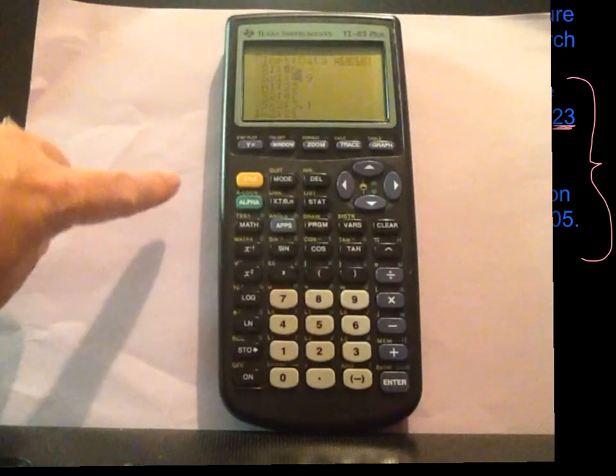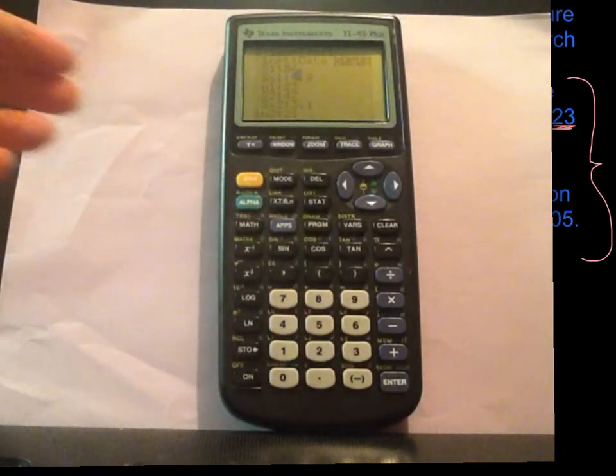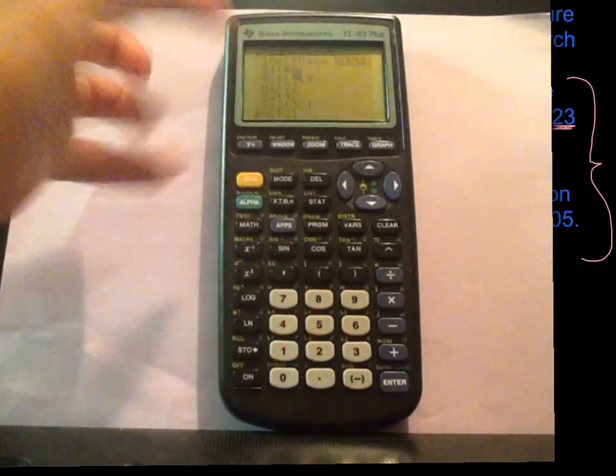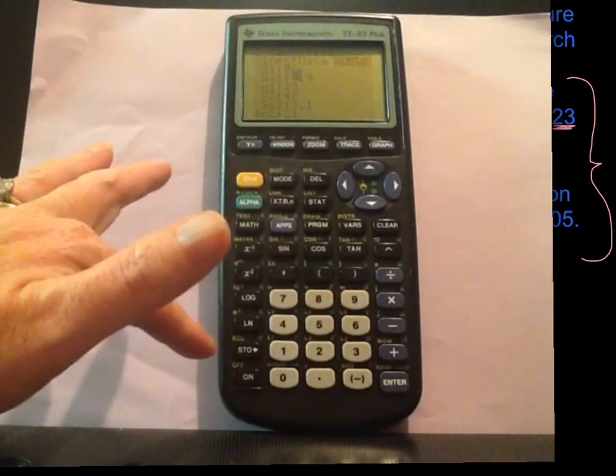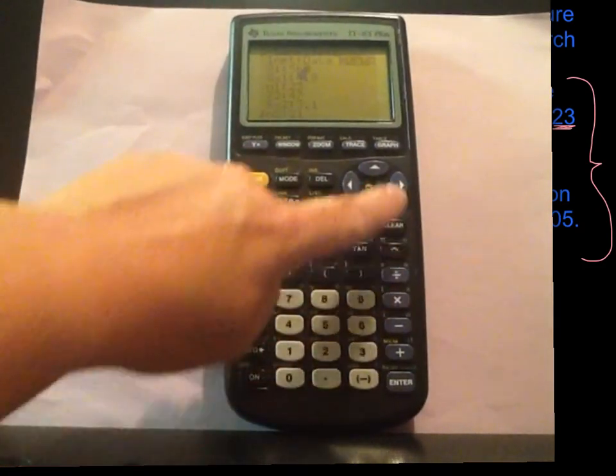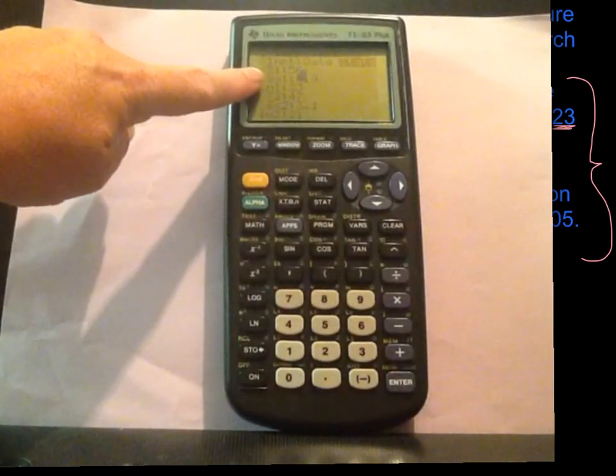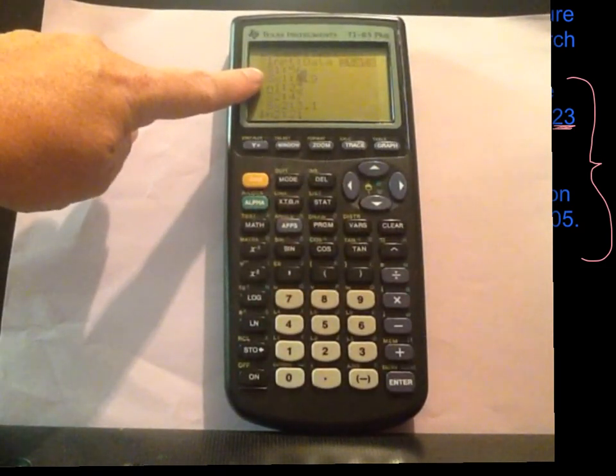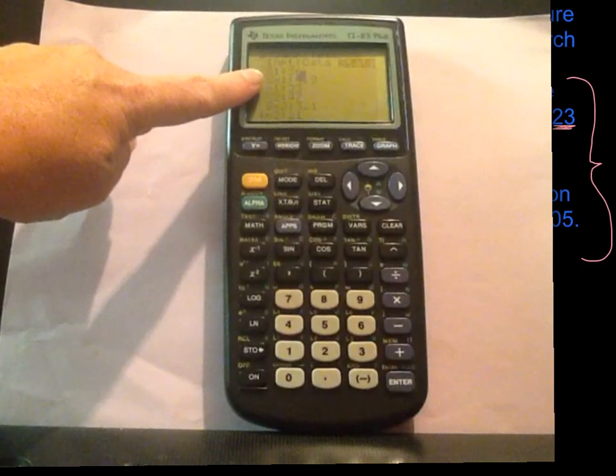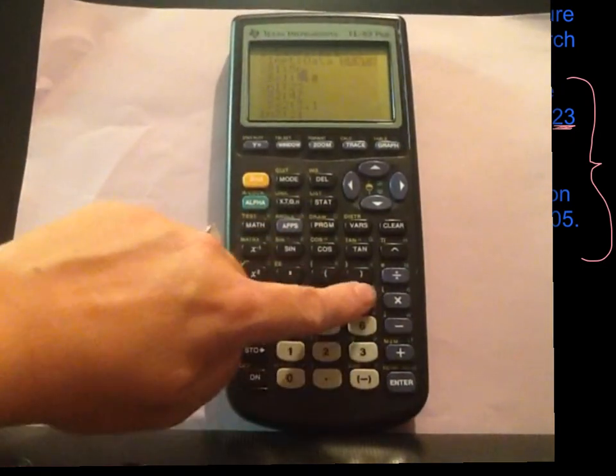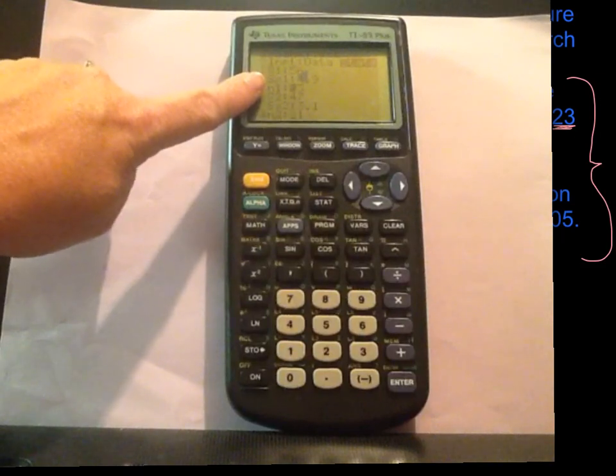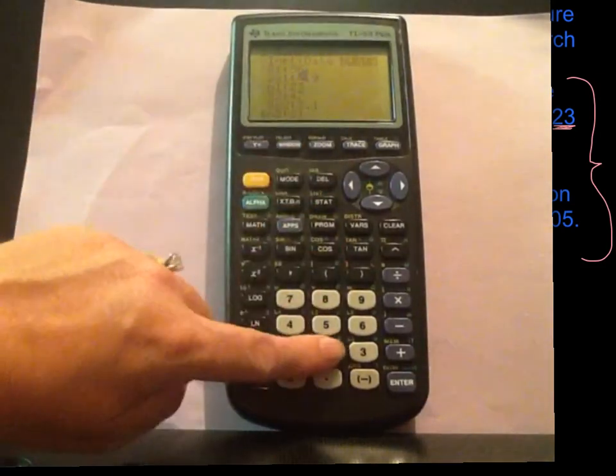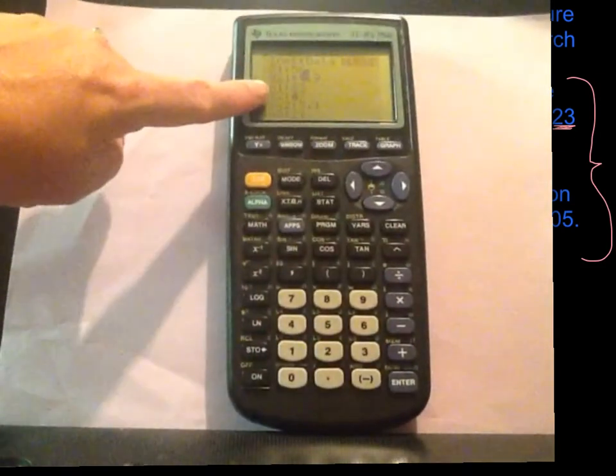So it asks for things in a completely different order than it did for the z-test. So first it says x-bar one, that means what's the sample mean of your first measure. I've already got these typed in there. So athletes are 56. So our sample mean is 56. Sx is sample standard deviation for one. So our athletes are measure one. Standard deviation was 4.9. N of one, that means how many were there in your first group. There were 23 athletes.